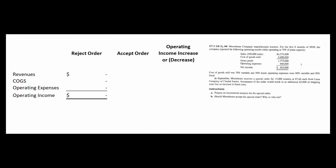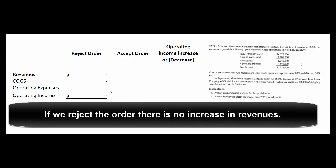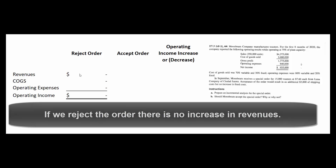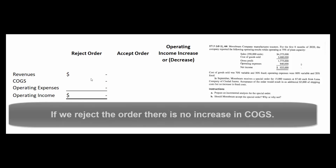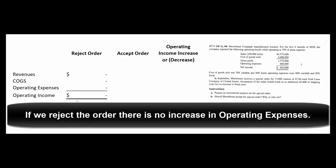There are a few different ways you could set this thing up. Let's do it the simplest way possible — a column for 'reject order.' If we reject the order, that means we don't have any sales, no increase in cost of goods sold, no increase in operating expenses. We don't get anything.